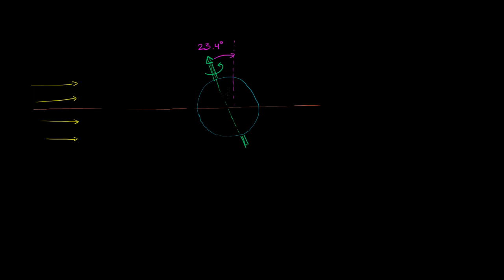When the Earth is on the other side of the sun and the Northern Hemisphere is pointed away from the sun, the opposite happens. The reverse is true for the Southern Hemisphere. But in that video, I also hinted that 23.4 degrees is the current tilt right now, and over long periods of time this tilt will change. In particular, it varies roughly between 22.1 degrees and 24.5 degrees.